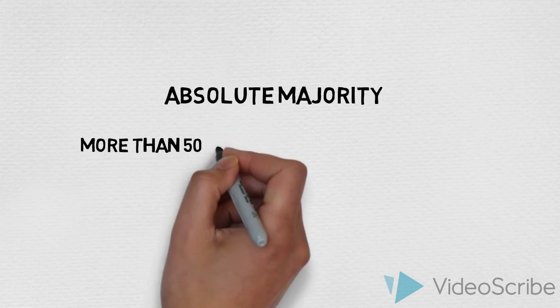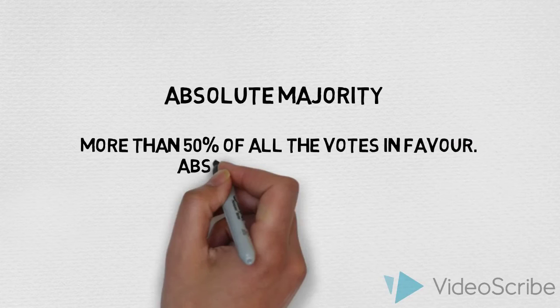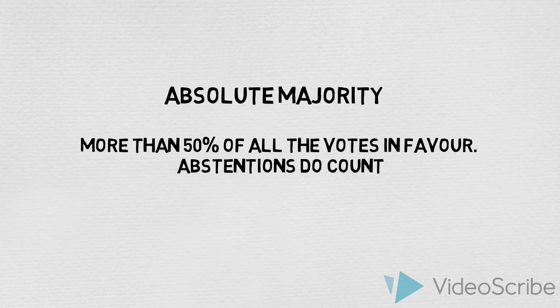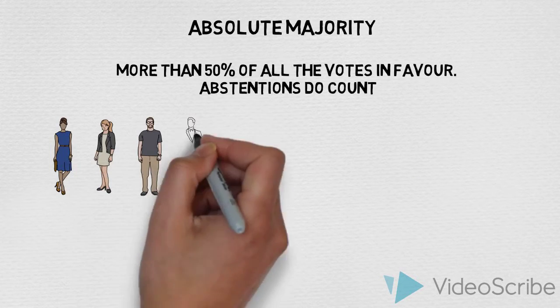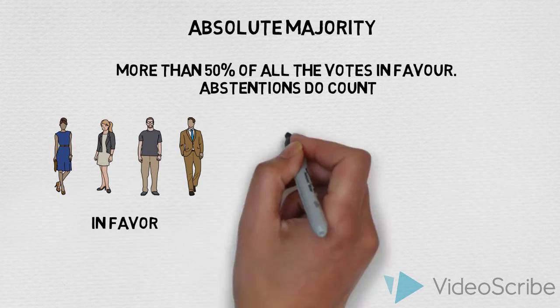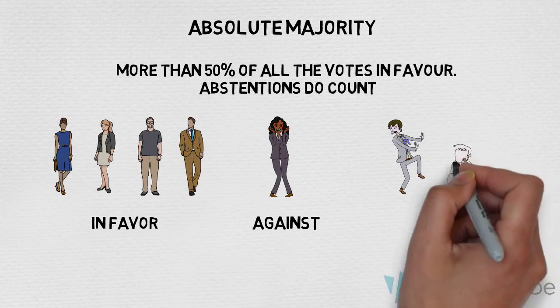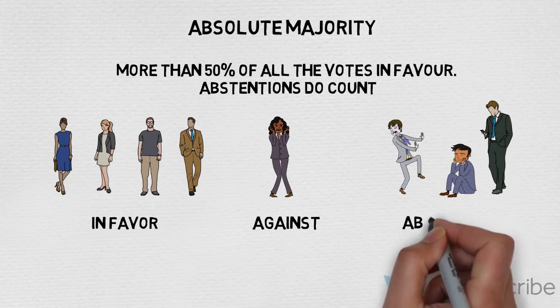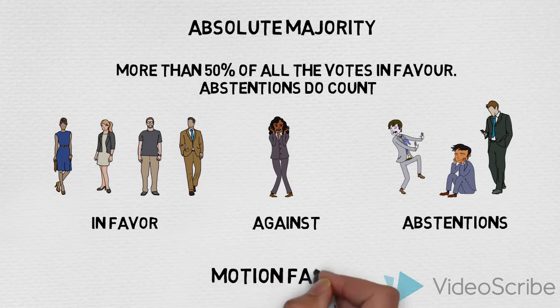Absolute majority: more than 50% of all the votes must be in favor, and abstentions do count. For example, here there are four in favor, one against, and three abstentions, so the motion fails.